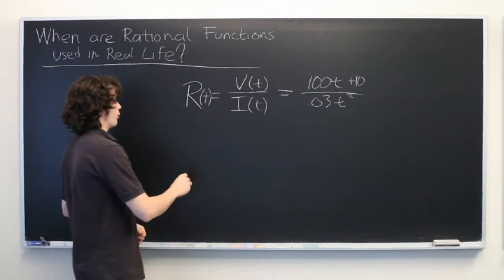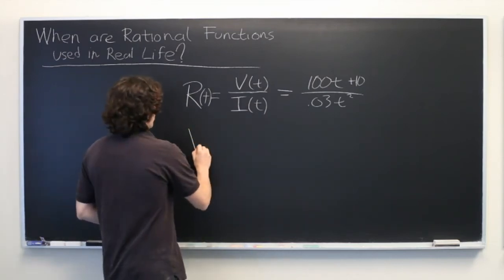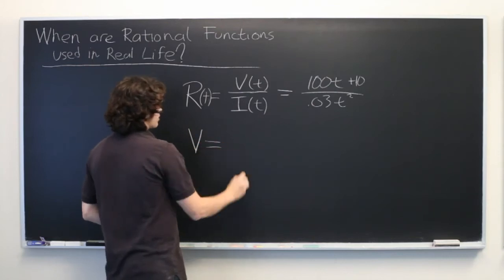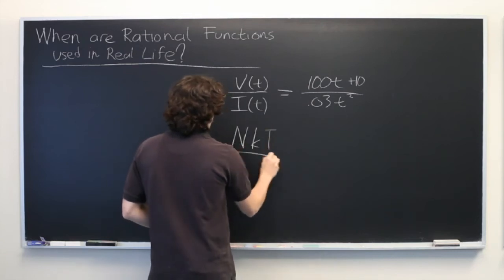Other example comes from thermodynamics, one of the ideal gas laws. State that the volume of a gas is equal to n times k times t over p.